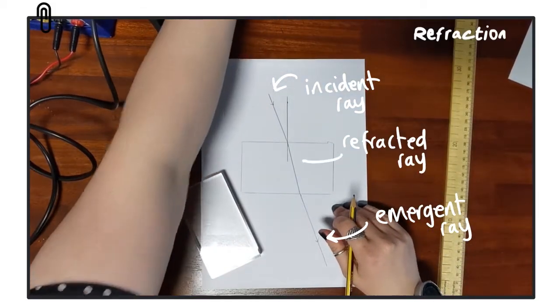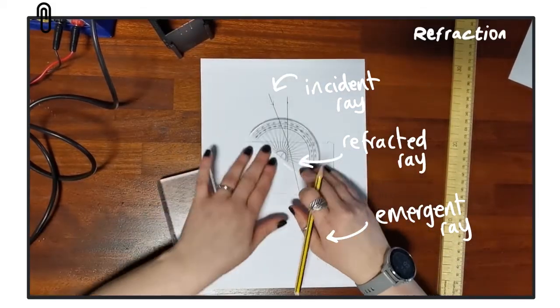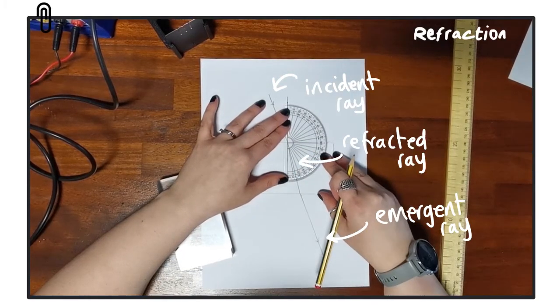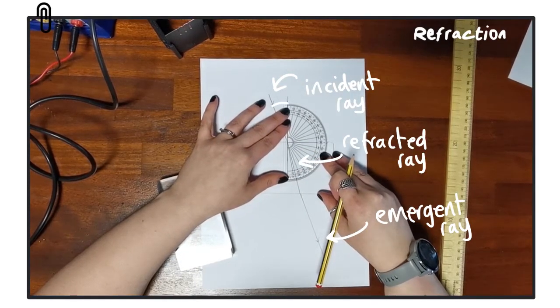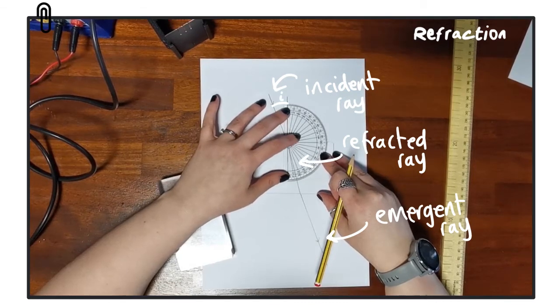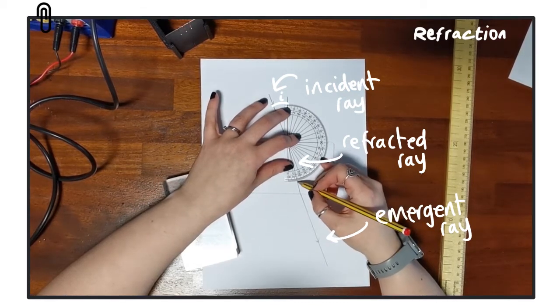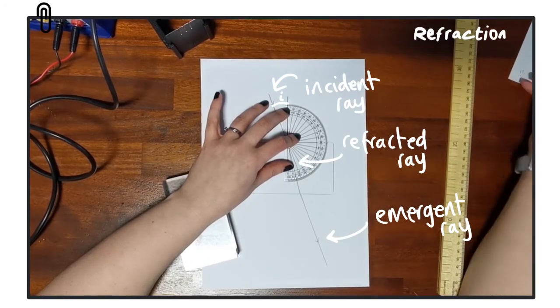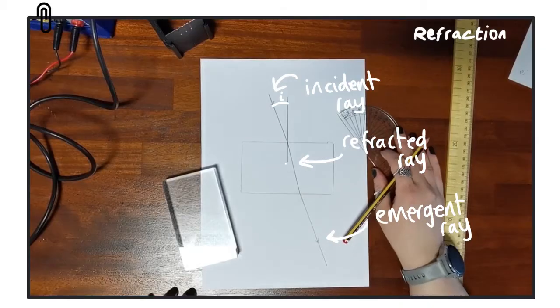So we need to measure the angles of incidence and the angle of refraction. We already measured the angle of incidence because we set it at 20 degrees, so now we need to measure the angle of refraction, which remember is between the normal and the refracted ray. In this case, the angle of refraction works out to be 13.5 degrees.